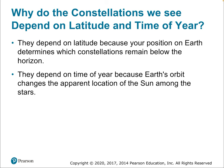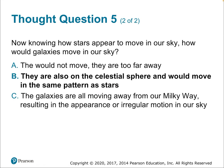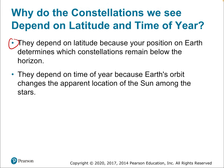Why do the constellations we see depend on latitude and time of year? They depend on latitude because your position on Earth determines which constellations remain below the horizon and which stars are circumpolar. They depend on the time of year because Earth's orbit changes the apparent location of the Sun — we can never see stars in the direction of the Sun because they're washed out by daylight, so we have to wait half a year to see those constellations at night.